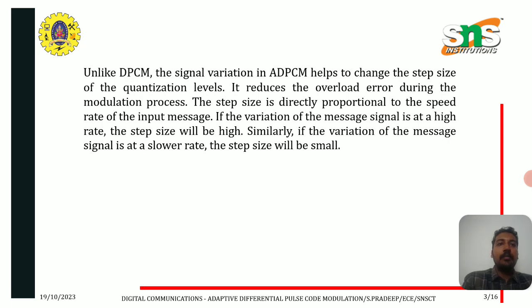Unlike DPCM, the signal variation in ADPCM helps to change the step size of the quantization levels. It reduces the overload error during the modulation process. The step size is directly proportional to the speed rate of the input message. If the variation of the message signal is at a high rate, the step size will be high. Similarly, if the variation of the message signal is at a slower rate, the step size will be small.